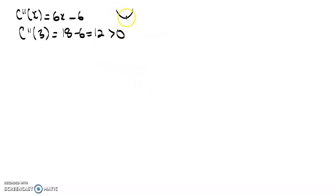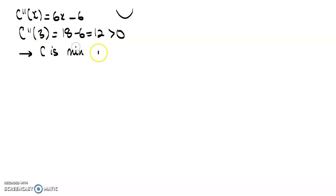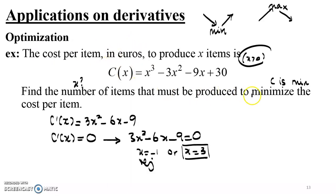Since the function is concave up at X equals 3, we have a minimum there. The second derivative at 3 being positive allows us to deduce that C is minimum at X equals 3. So the answer is: we need to produce 3 items in order for the cost per item to be minimum.